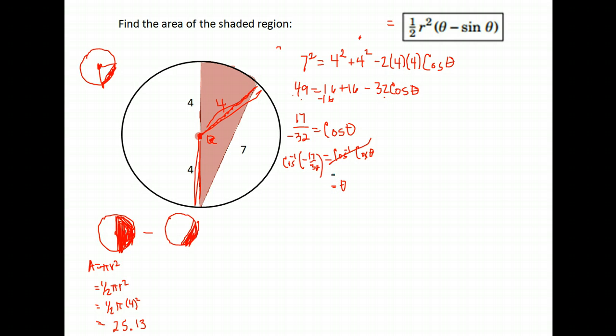Okay, so the inverse cosine of negative 17 over 32 gives me about 2.13 radians. So the measure of this angle in the center is 2.13 radians. I'm going to use that to find the area of this segment—this white section here.